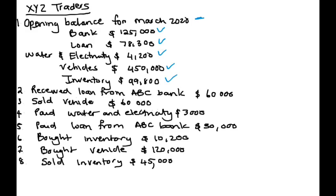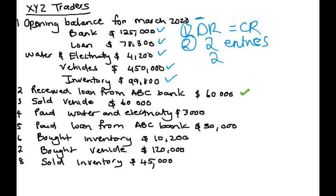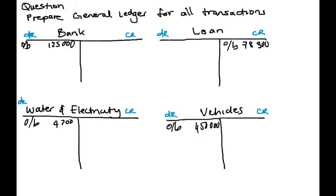Then we start off with the transactions. Received loan from ABC Bank of $60,000. Remember what we spoke of — we're in the double entry system, so debit entries are always equal to your credit entries. Each and every single account will always have two entries. Every single transaction has two entries, or you can say two accounts are always involved. When we receive money — debit. When we lose money — credit.